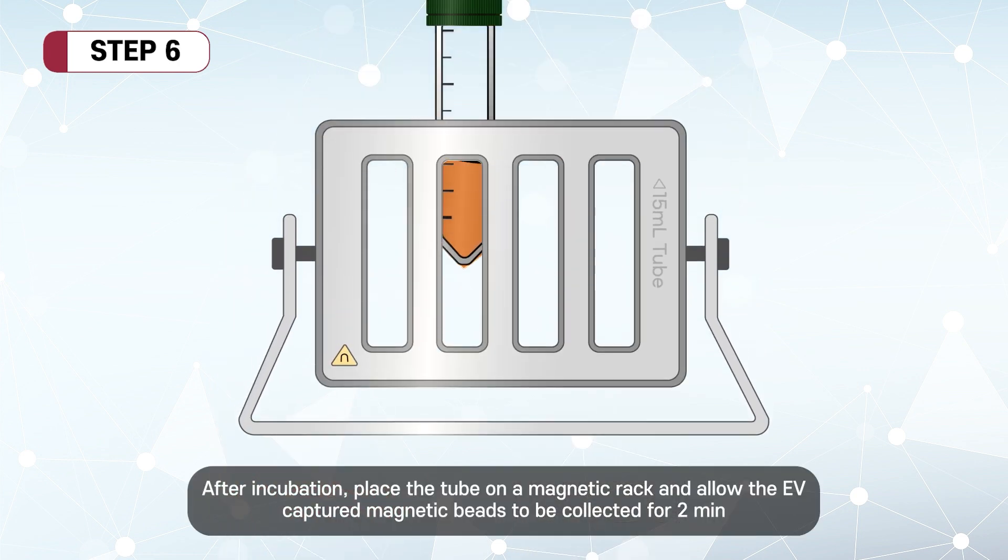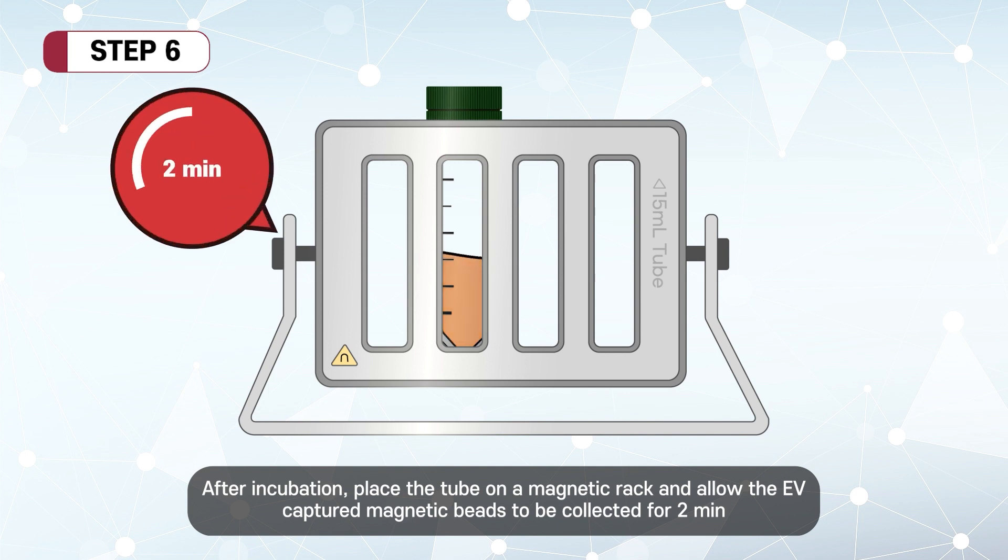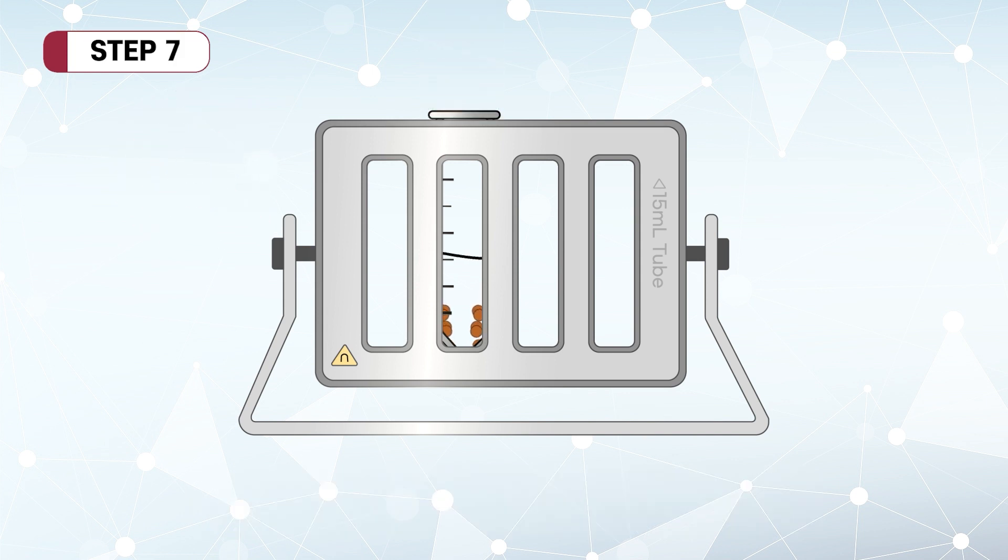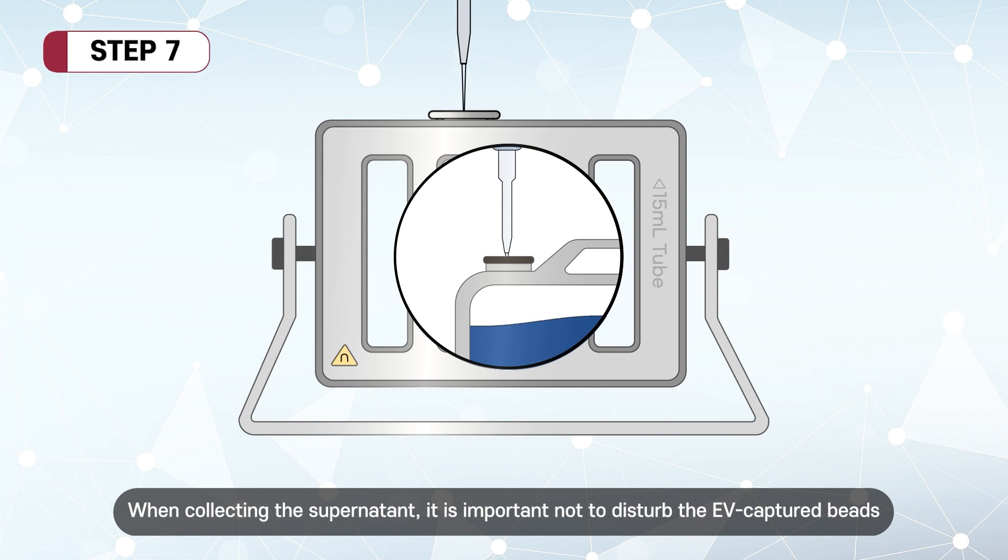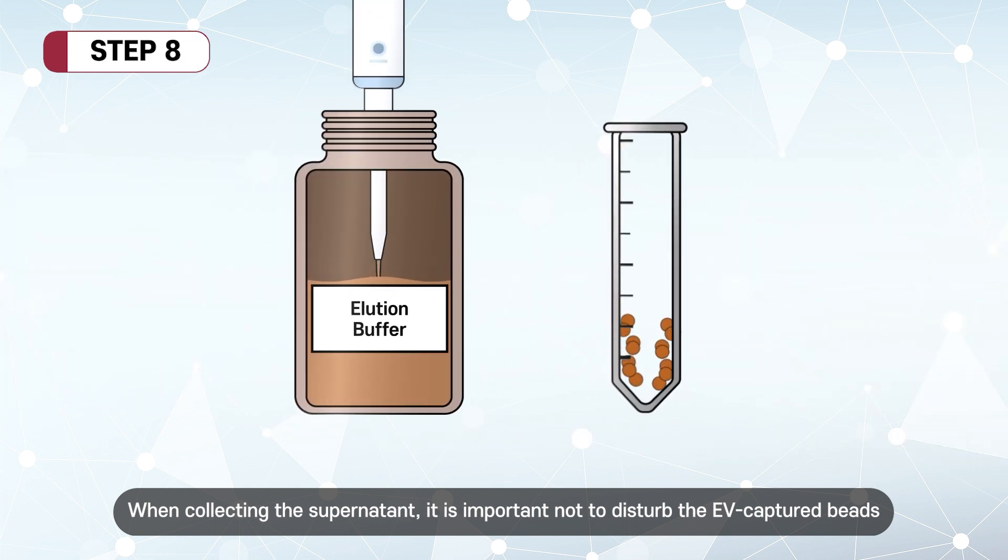After incubation, place the tube on a magnetic rack and allow the EV-captured magnetic beads to be collected for 2 minutes. Remove the supernatant in the tube. When collecting the supernatant, it is important not to disturb the EV-captured beads.